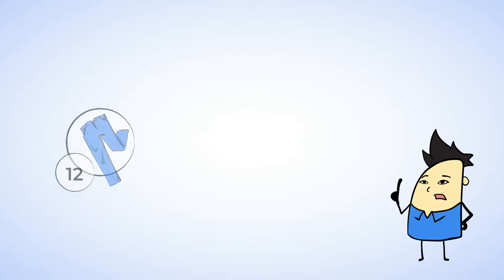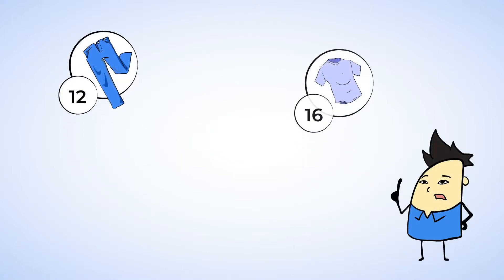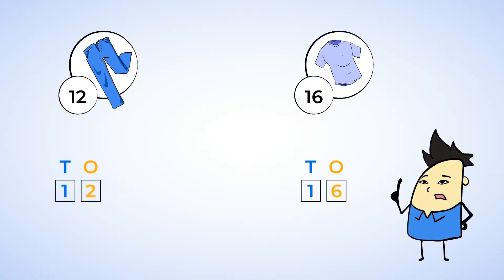And look over here. We have 12 pairs of pants and 16 shirts. If we want to know which is more, we should compare the tens first. 1 ten is equal to 1 ten, and so we're going to have to move on over to the ones. 2 is less than 6, and that means that 12 is less than 16. So we need to use the less than symbol.